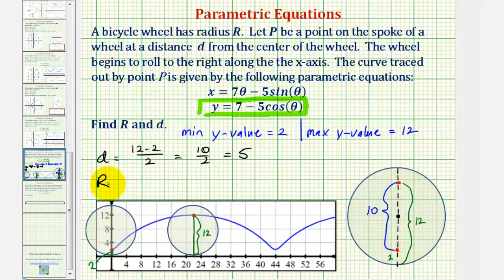And now to find big R, the radius of the wheel, if we now know this is five, and we know the distance from this point to the edge of the wheel is two, big R would have to be just five plus two or seven.